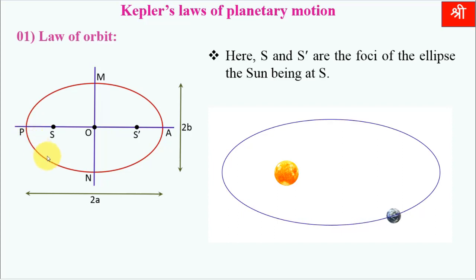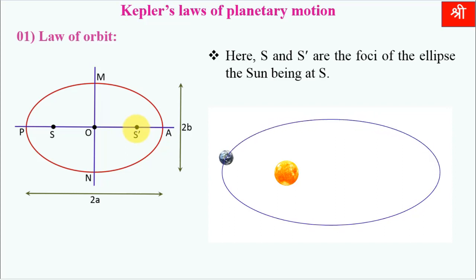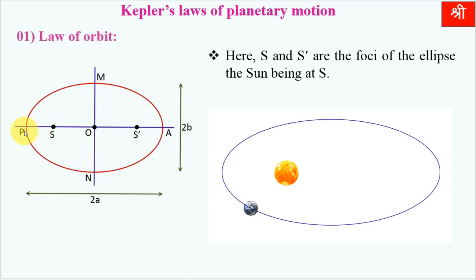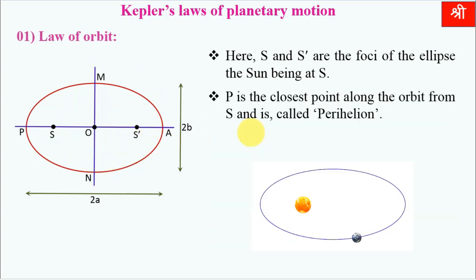Just as a circle has one center, an ellipse has two foci. You will learn the details about the ellipse in mathematics. There are two foci — one is S and the other is S-dash. The sun is at one focus S, and the planet P travels along this elliptical path. P moves in an elliptical orbit — that is the first law.